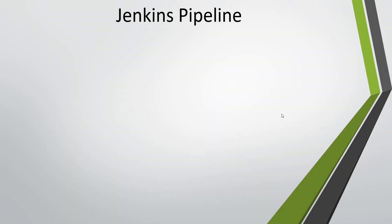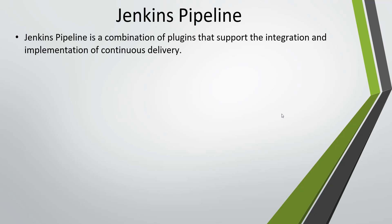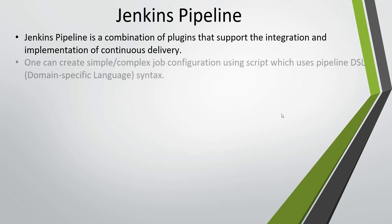Hello everyone. In this video I am going to discuss about Jenkins pipeline. So what is a Jenkins pipeline? Jenkins pipeline can be defined as a combination of plugins that supports integration and implementation of continuous delivery. One can write simple and complex job configurations using a script that follows the pipeline DSL syntax — that means pipeline domain specific language.